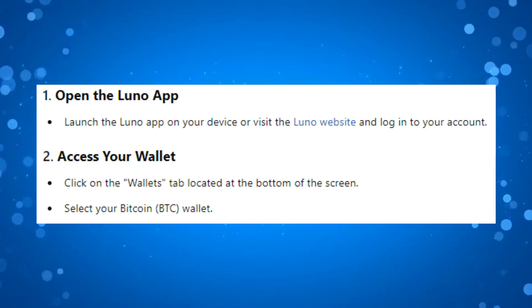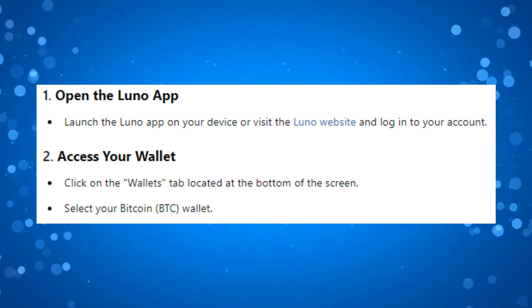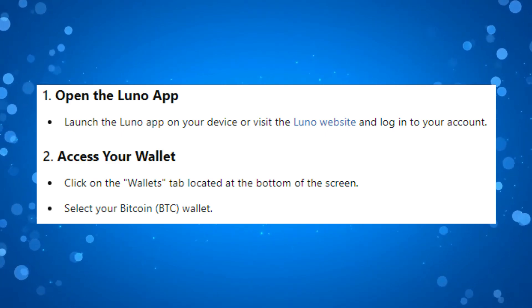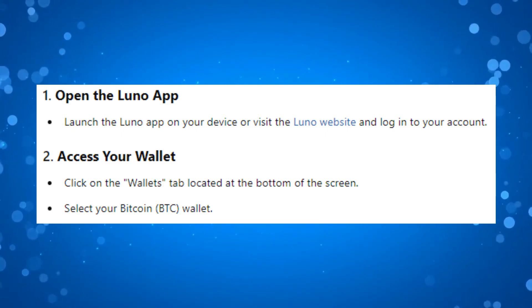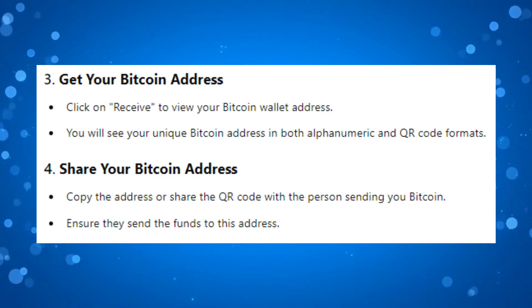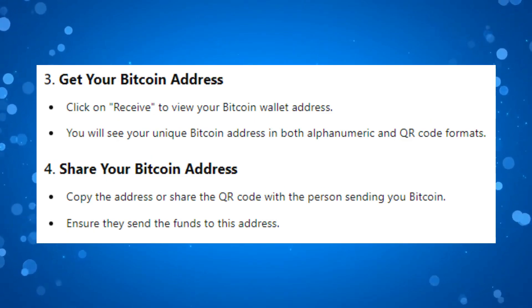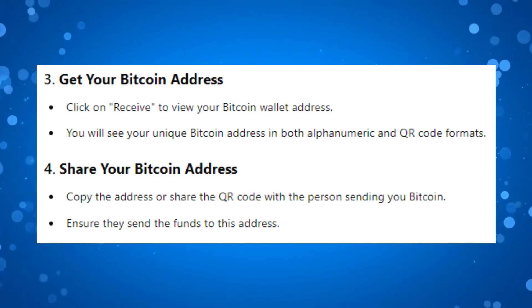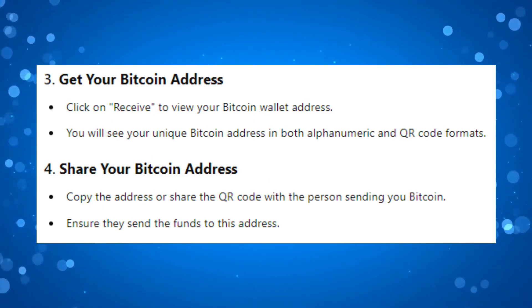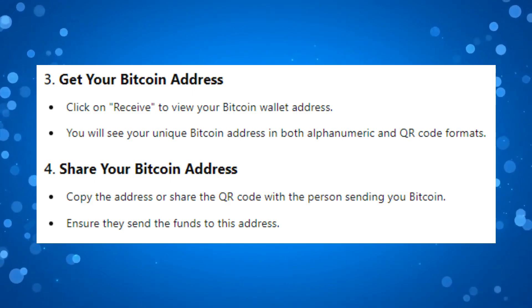Once you're logged in, what you want to do is click onto the Wallets tab which is located at the bottom of the screen, and then select your Bitcoin Wallet. On the next screen, what you want to do is click onto Receive, which is going to give you your Bitcoin Wallet address.